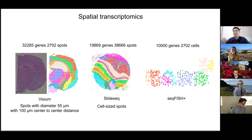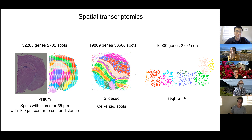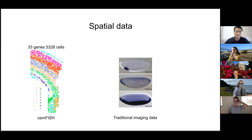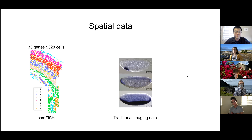Another technique called seqFISH by Long Cai at Caltech can measure gene expression with subcellular resolution, so we can group the molecules in each cell to form single-cell resolution data. The drawback is it covers much fewer cells than the other two techniques, and this data is actually a concatenation of five independent experiments — they take small batches and glue them together. We also have other data sets like osmFISH with good spatial resolution but very few genes, and even traditional staining data for Drosophila embryo measured on different replicates.